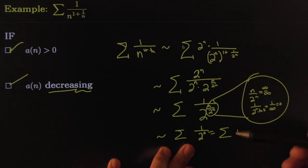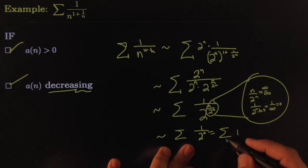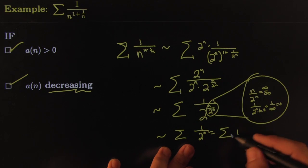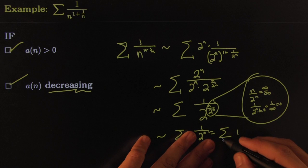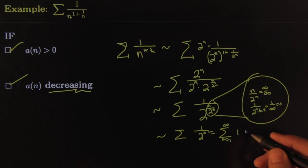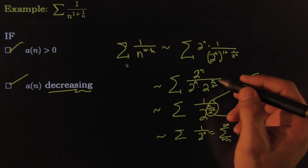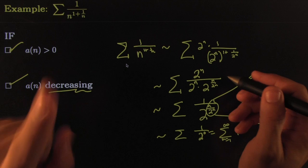If you have any doubts, you can do a little limit comparison test or whatnot. This says that the original one behaves just like this one, and so therefore it diverges, clearly and obviously, because this is just adding one infinitely many times. Very nice, elegant use of the Cauchy condensation test. Amazing.